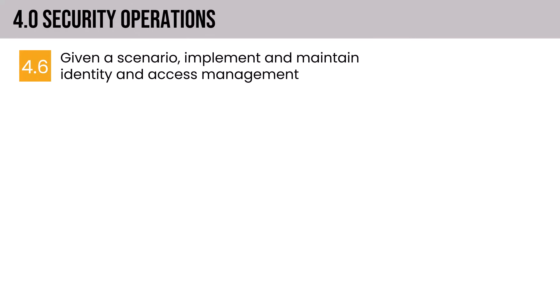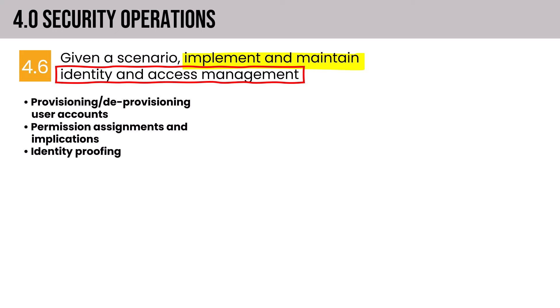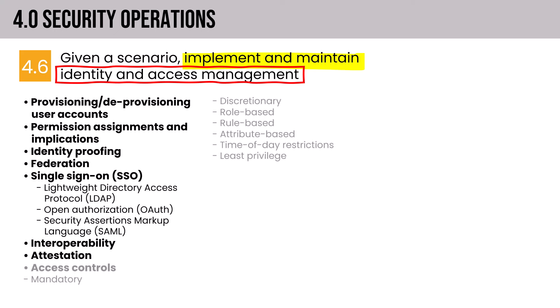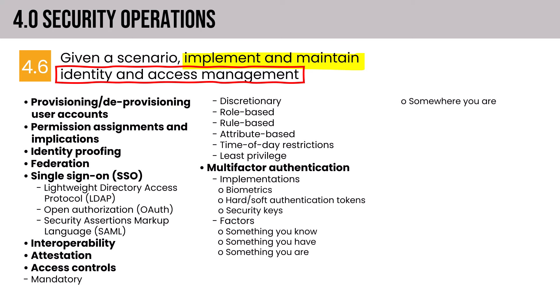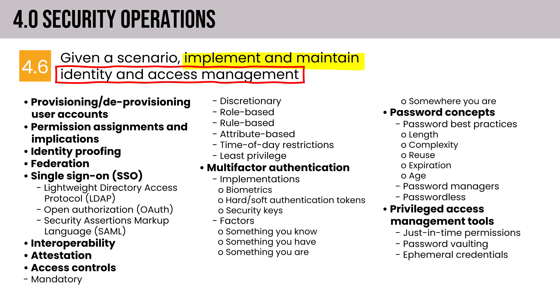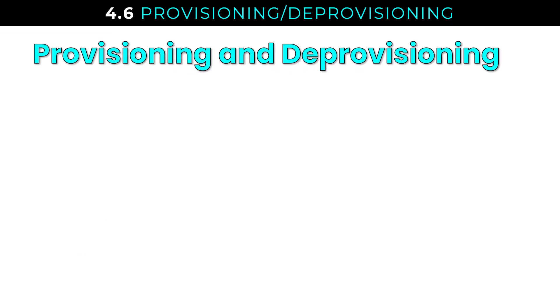The syllabus challenges us, given a scenario, to implement and maintain identity and access management. We'll start with identity lifecycle topics like provisioning and deprovisioning, permissions, and identity proofing. Then we'll pivot to federation, single sign-on, interoperability, attestation, access controls, and MFA. We'll get into the factors of multi-factor authentication, password concepts — which should be a freebie — and wrap up with privileged access management tools. These are all modern concepts very likely to appear on the exam.